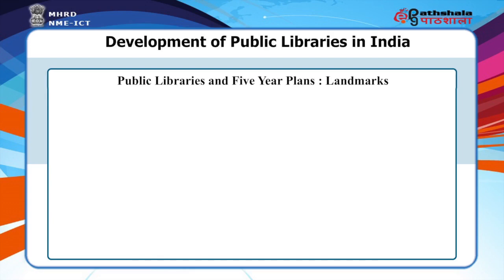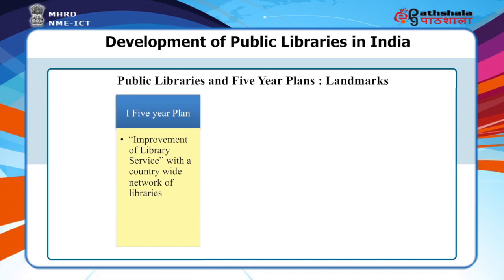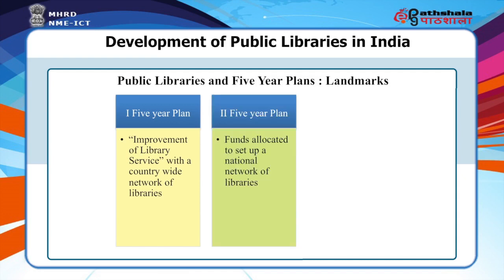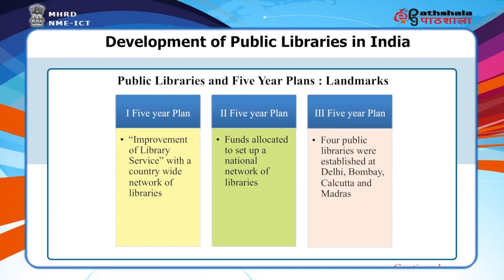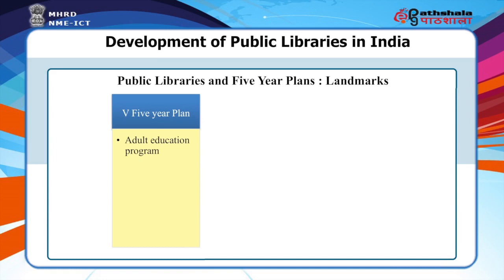Public libraries and five-year plans. The first five-year plan talked about improvement of library services with a country-wide network of libraries. The second five-year plan allocated funds to set up a national network of libraries. In the third five-year plan, four public libraries were established at Delhi, Bombay, Calcutta and Madras. In the fifth five-year plan, an adult education program was introduced and public libraries were started to support the adult education program.